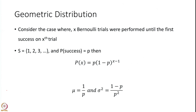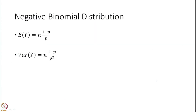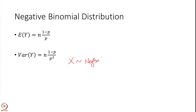For notation: if X follows a geometric distribution, we write X ~ Geometric(P) with one parameter P. If it follows a negative binomial distribution, the notation is X ~ NegBin(n, P), with the same parameters n and P as in the binomial distribution.